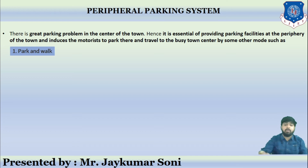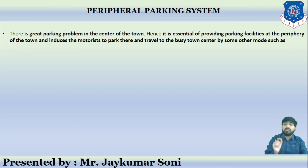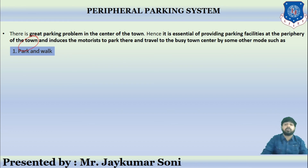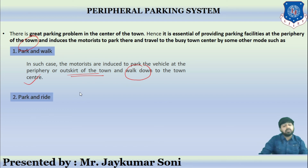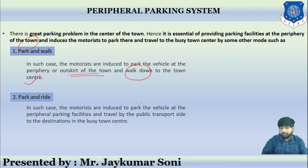The last type is the peripheral parking system. There is a great parking problem at the centre of towns, so it is essential to provide parking at the periphery, inducing motorists to park there and travel to the busy town centre by public transport. The first sub-type is park and walk, where motorists park at the outskirts and walk to the centre. The second is park and ride, where people park at peripheral facilities and travel to the city centre using public transport such as BRTS, AMTS, or BTS.